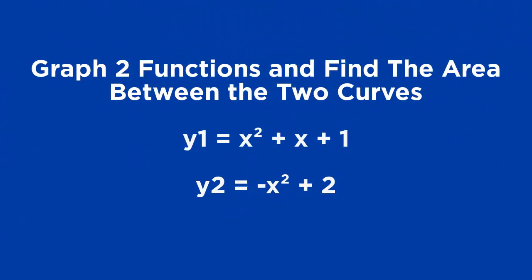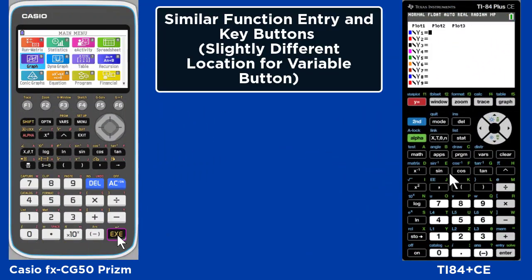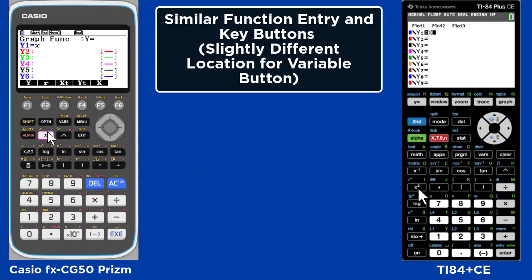In this video, we're going to be showing you how to graph two functions and find the area between the two curves. We're using the Casio FX CG50 Prism and the TI 84 Plus Color Edition graphing calculators.